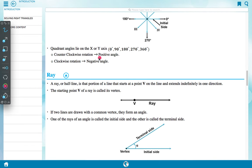Quadrant angle lies on x and y axis: 0 degrees, 90 degrees, 180 degrees, 270 degrees, 360 degrees. Counter-clockwise rotation: positive angle. Clockwise rotation: negative angle. Ray: A ray or half line is that portion of a line that starts at a point V on the line and extends indefinitely in one direction. Starting point V of a ray is called its vertex. If two lines are drawn with a common vertex, they form an angle. One ray of an angle is called the initial side and the other side is called the terminal side. Given here vertex, two lines joining here, terminal side joining at vertex and initial side joining at vertex.